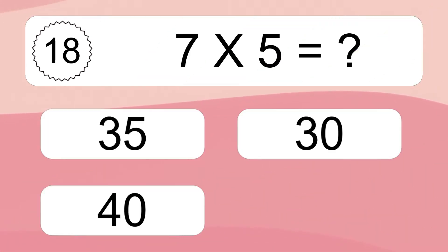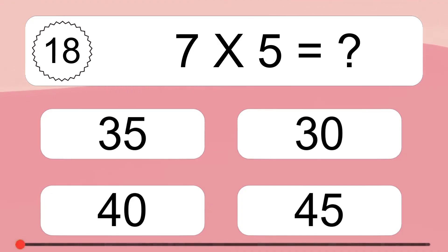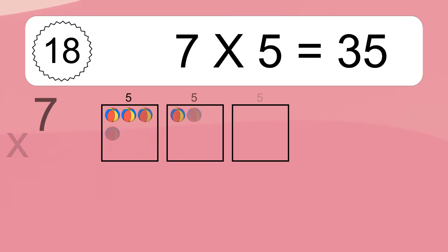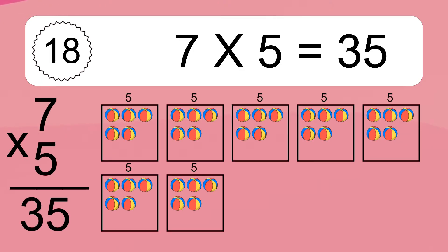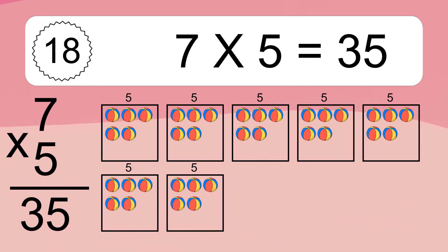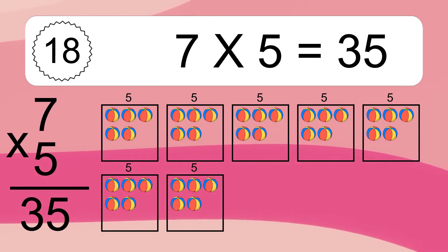7 times 5 equals what? 7 times 5 equals 35. We have 7 boxes, and each box has 5 colorful balls inside. If you count all the balls in all the boxes together, you will have 7 times 5 balls. This equals 35 balls.